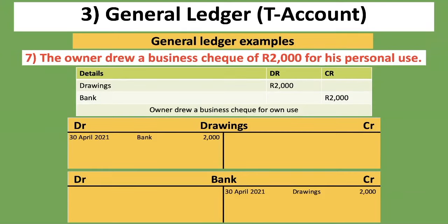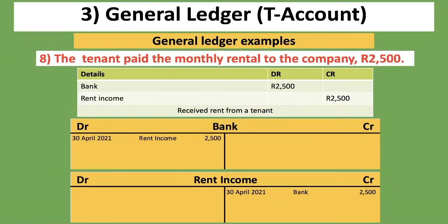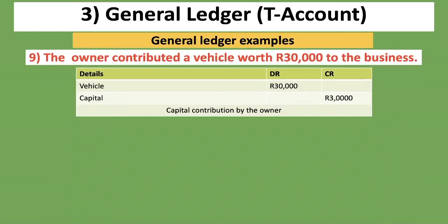Seventh transaction: the owner drew a business check of 2,000 rand for personal use. Drawings is an equity account that decreases equity, so it goes on the debit side, and bank goes on the credit side. Eighth transaction: the tenant paid the monthly rent to the company, 22,500 rand. Bank is increasing — debit side — and rent income is an income account that increases on the credit side.